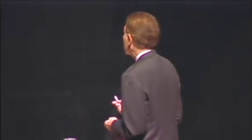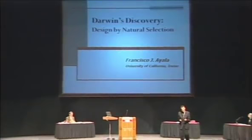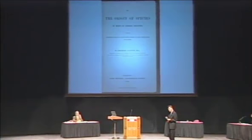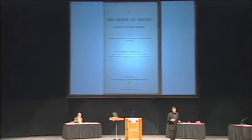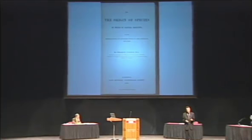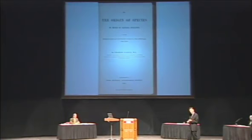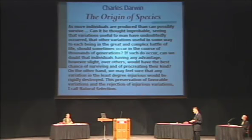So, design by natural selection — the previous topic was evolution by natural selection. Darwin was able to explain how design comes about by natural selection in, as I said before, nine of the fourteen chapters, and this theory has advanced enormously. Let me review for a moment his theory.